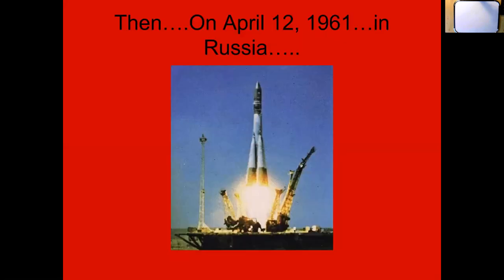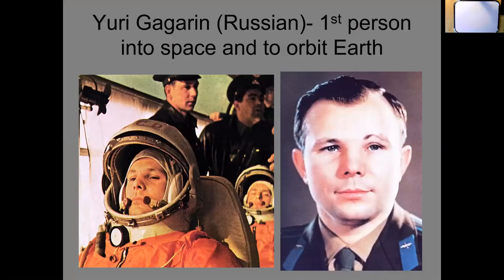We were getting ready to send an astronaut up, but on April 12th, 1961, Russia beat us again with a person. Yuri Gagarin became the first person into space and to orbit the earth. That's good to know - Yuri Gagarin.